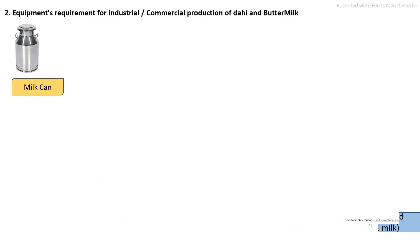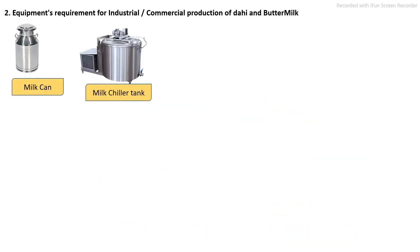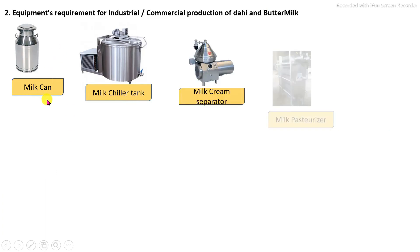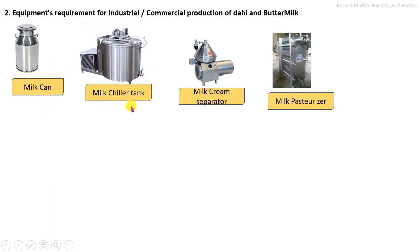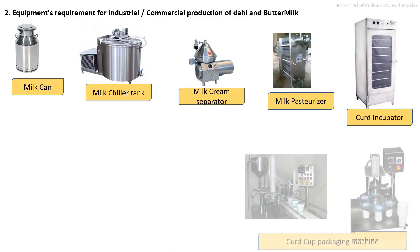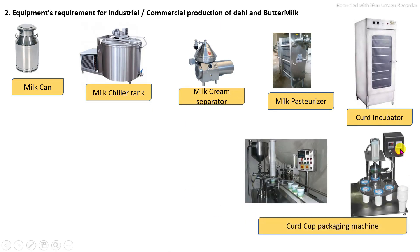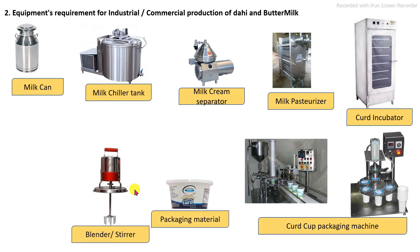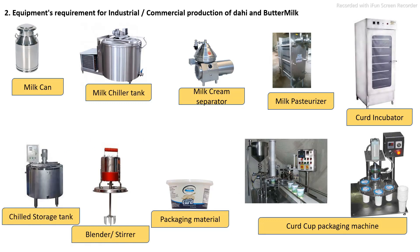The main equipment required for the curd production industry: milk collection cans, milk chilling tank, milk cream separator for standardization, milk pasteurizer, curd incubators, packaging system — cup system or pouch system — blender for preparation of buttermilk or other products like lassi, and chilled storage tank. These are the minimum equipment required for commercial production of curd.